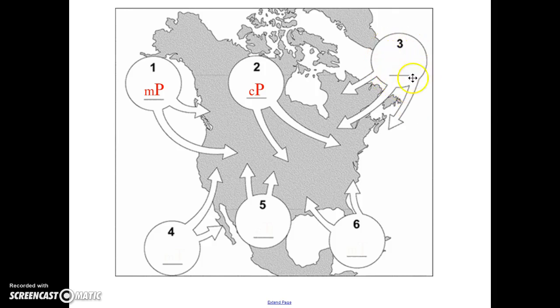Air mass number three is forming over the North Atlantic Ocean. So because there's an ocean, it's maritime. And again, it will be cold. It will be polar.